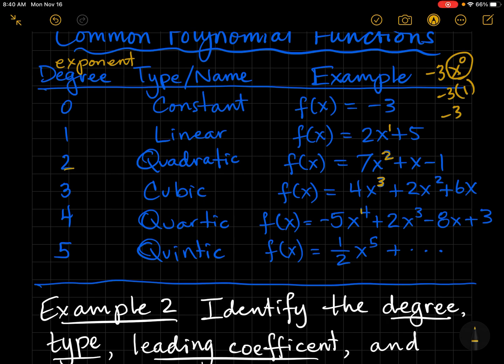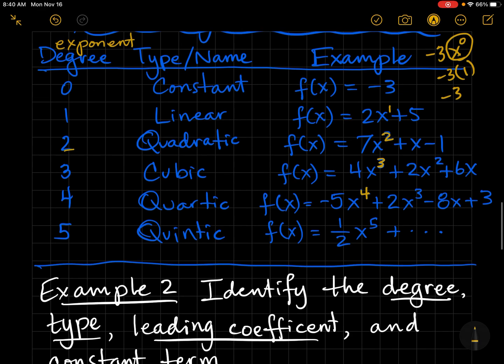And quartic, like four quarts in a gallon, that has the highest exponent of four. And quintic has the highest exponent of five.